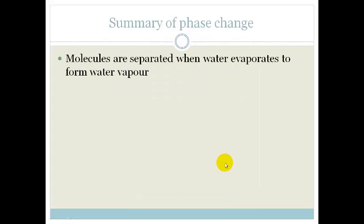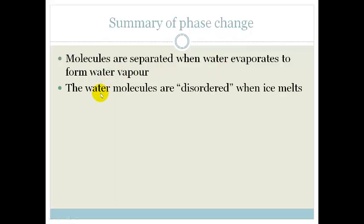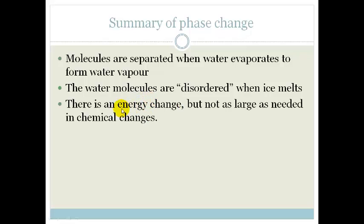Let's just summarize that. The molecules are separated into water when water vaporates to form water vapor. The water molecules are disordered when ice melts but there is an energy change but it's not as large as needed in chemical changes.